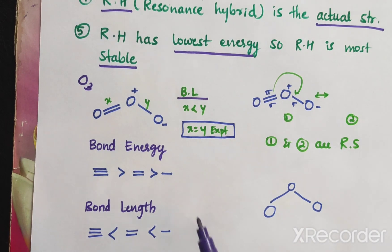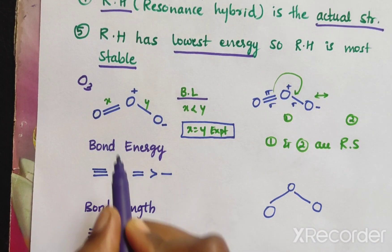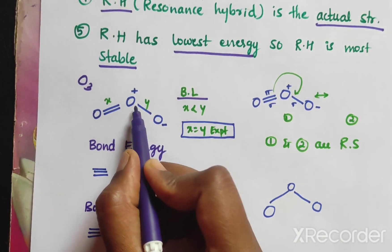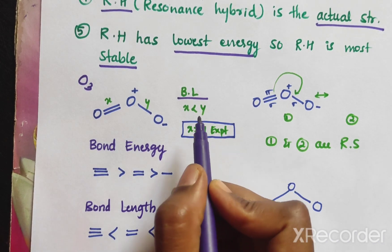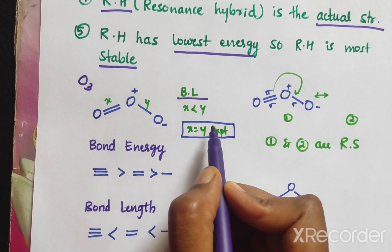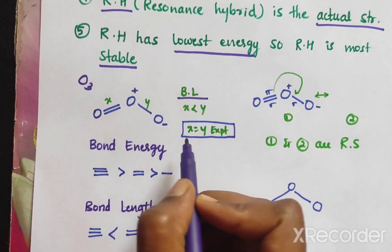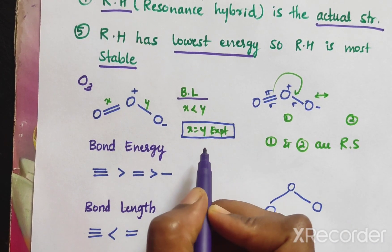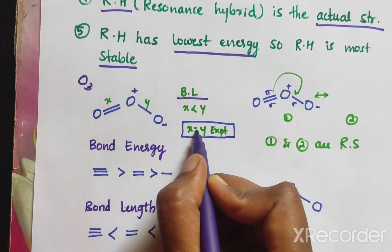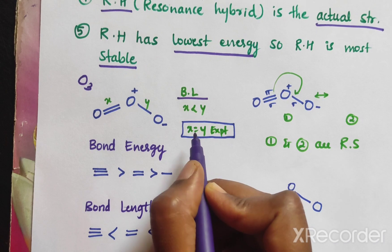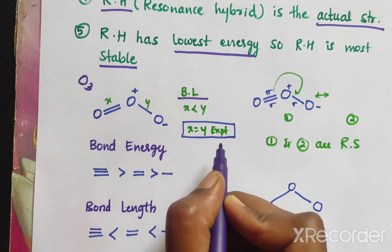But according to experiment, X is equal to Y — meaning both bond lengths are the same. This is experimentally proved.